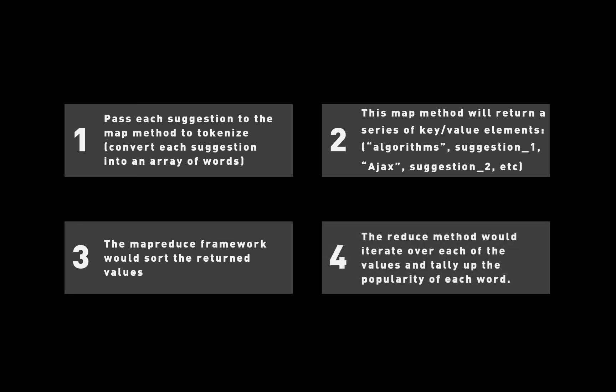Lastly, the Reduce method would iterate over each of the values and tally up the popularity of each word. So the final result would be something like: algorithms was listed 5,000 times, object-oriented programming was listed 1,500 times — going through each one of the topics, what the recommendations were, and what the count was. Once I have that data, it'll be a lot easier to manage, and I can decide on what type of shows to do next.